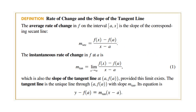When we are talking about average rate of change, we mean the slope of a secant, which is f of x minus f of a over x minus a. But when we are talking about instantaneous rate of change, we are talking about the slope of a tangent.